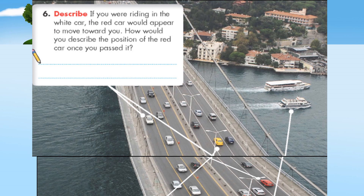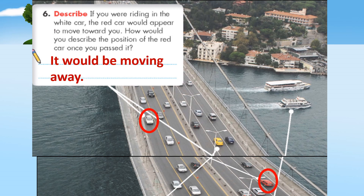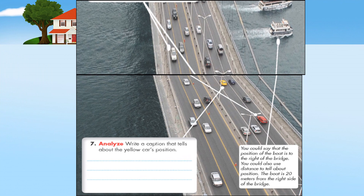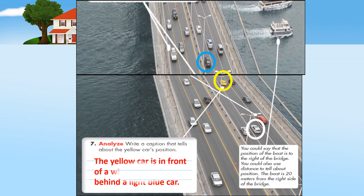Now let's find the answer for question number 6. If you were riding in the white car, the red car would appear to move toward you. How would you describe the position of the red car once you pass it? Your answer: it would be moving away. For question number 7, write a caption about the yellow car's position. In the picture there is a yellow car, a red car, and a light blue car. The yellow car is in front of a white car and behind a light blue car.